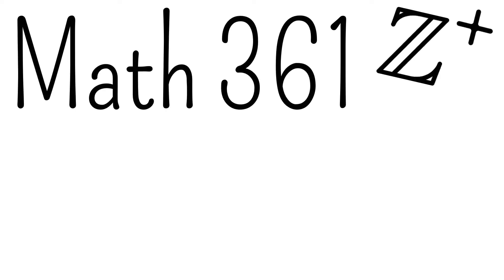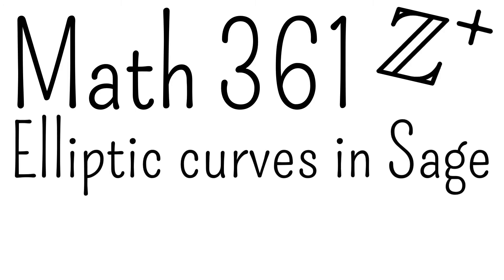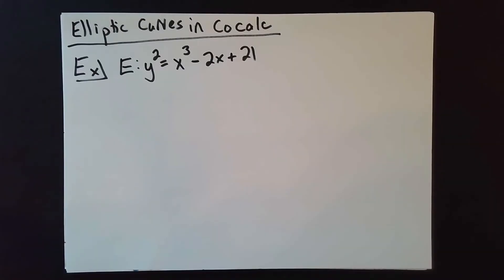Welcome back, everyone. Our goal today is to talk about how to handle elliptic curves in CoCalc, and how to interpret what CoCalc says about elliptic curves when you ask it about the various sorts of things we've talked about. We're going to start by talking about elliptic curves over Q, which is what we talked about first, and then we'll do some examples over finite fields as well.